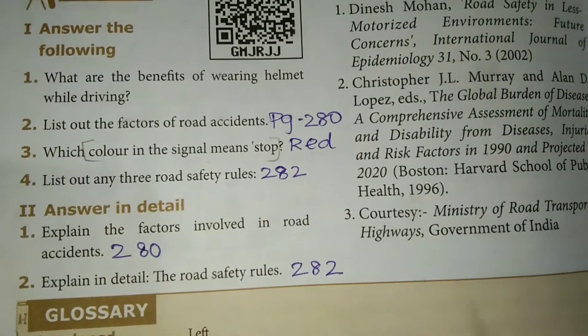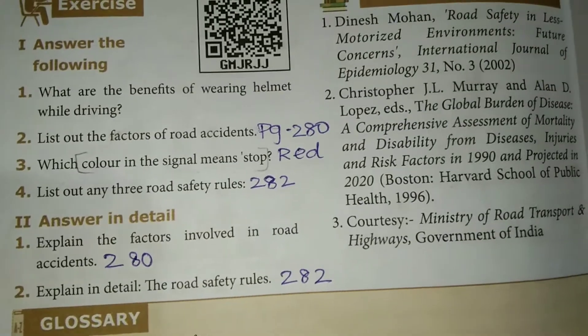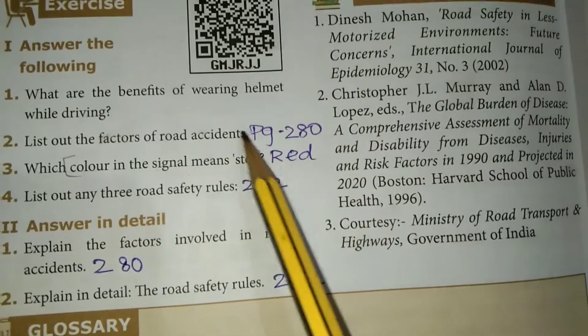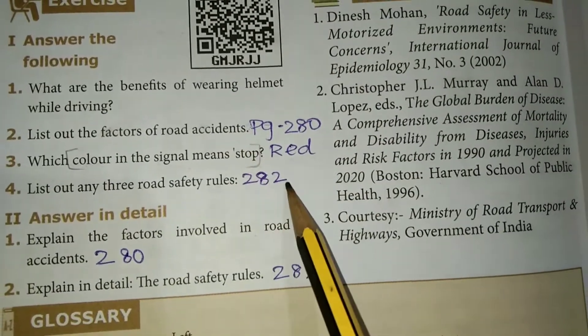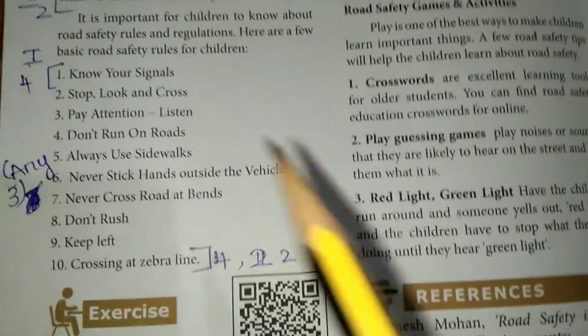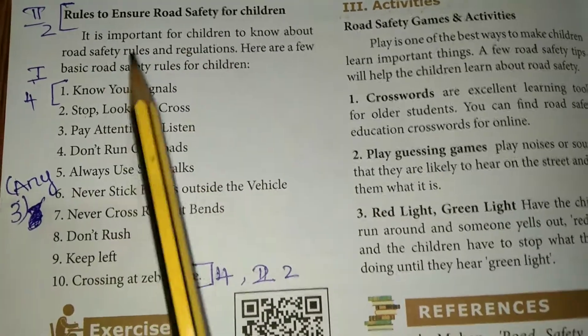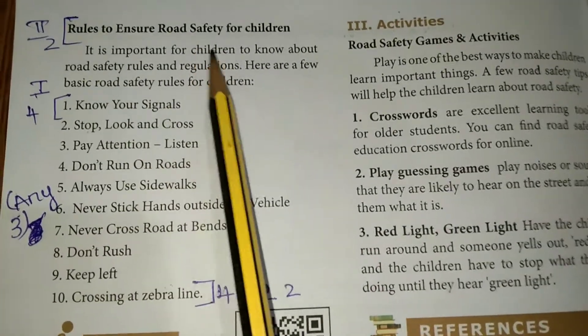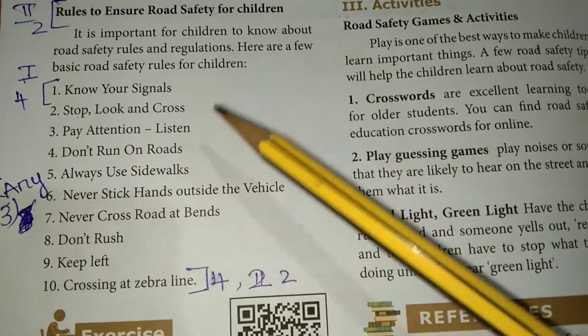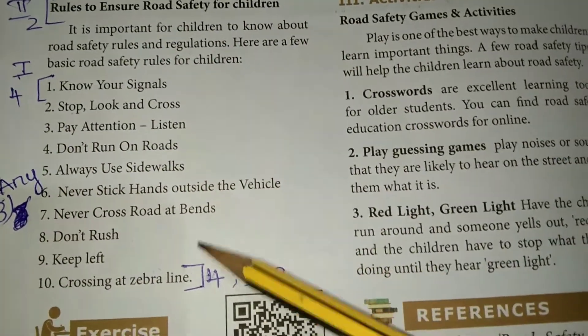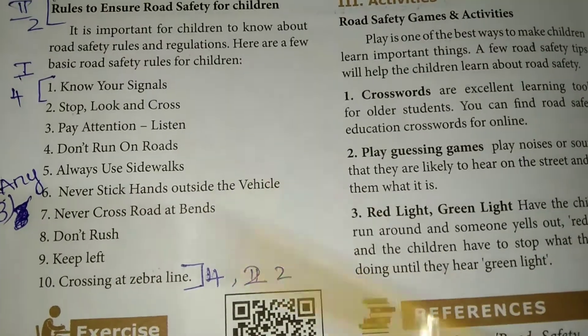Fourth question: list out any 3 road safety rules. This is page number 282. The heading is rules to ensure road safety for children, which has 10 points in total. You need to write any 3 points for this answer.